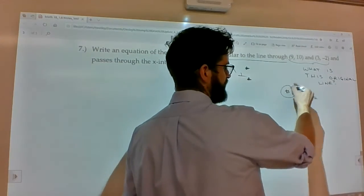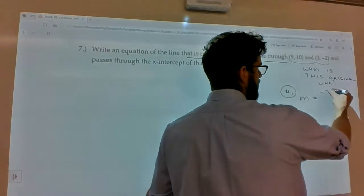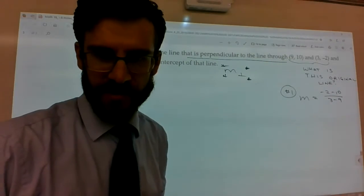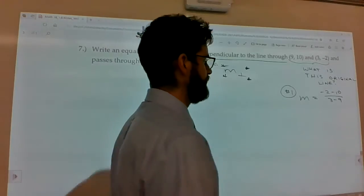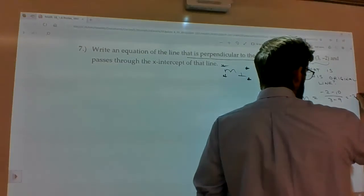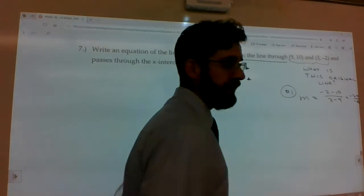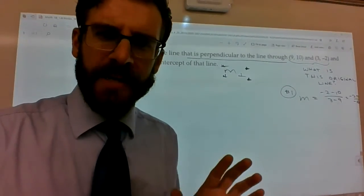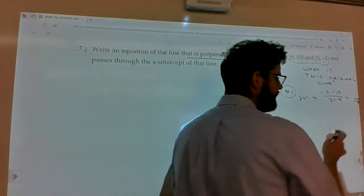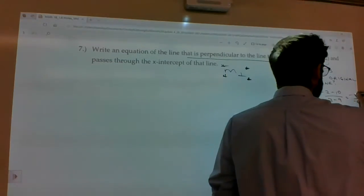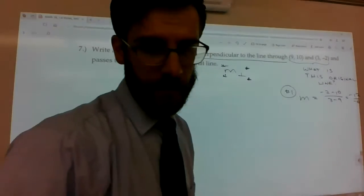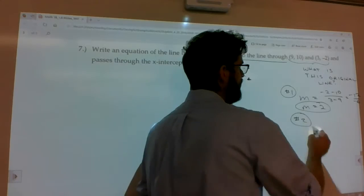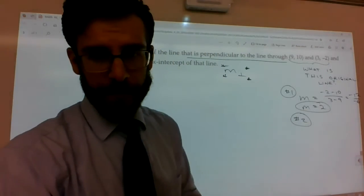Well, step one for that process would be, find the slope. So, you take the y's and subtract them. Take the x's and subtract them. You get negative 12 over negative 6. It ends up being 2.